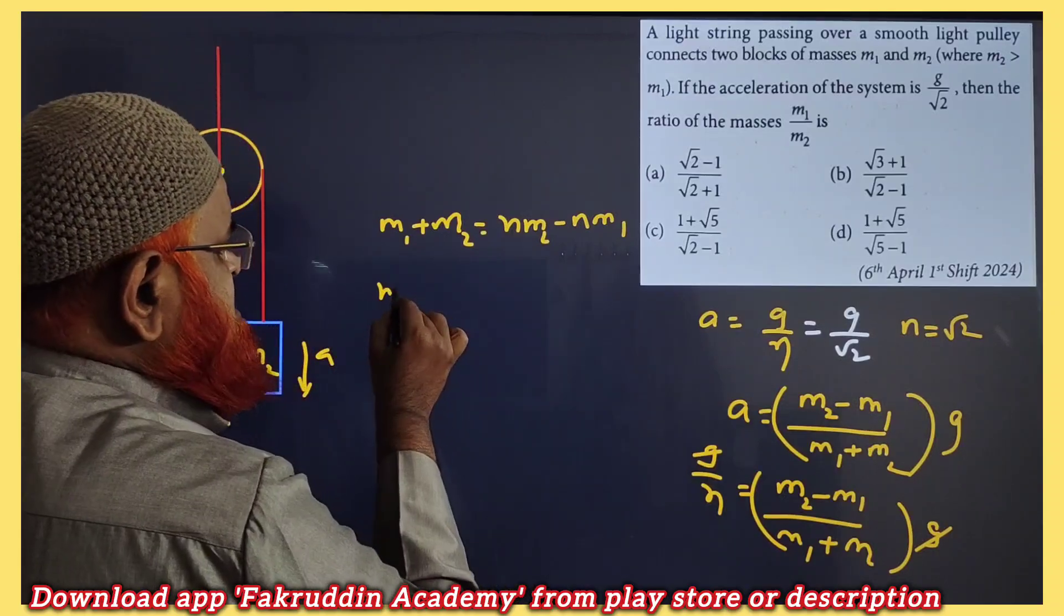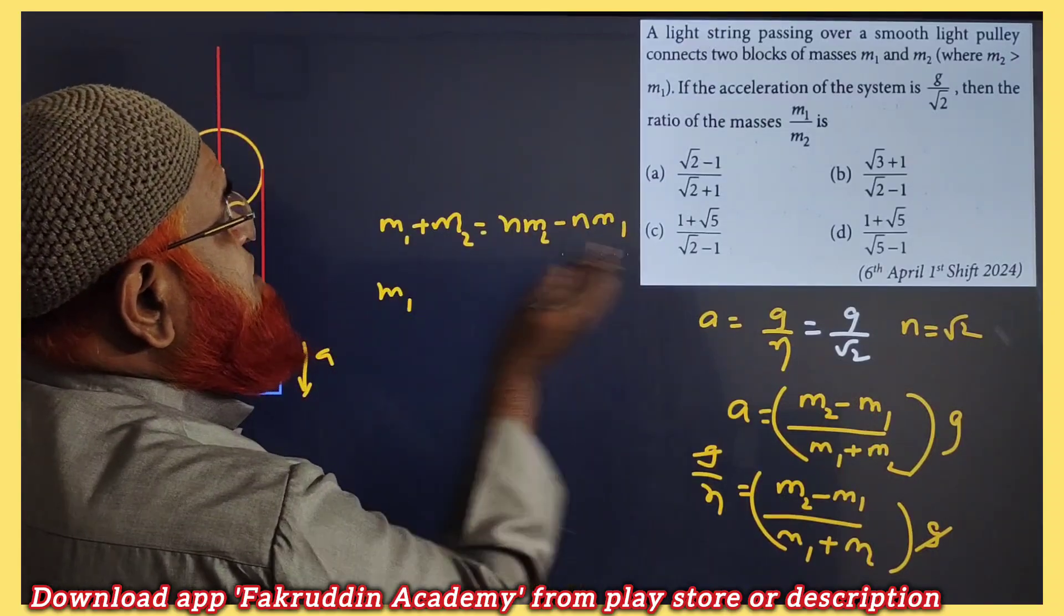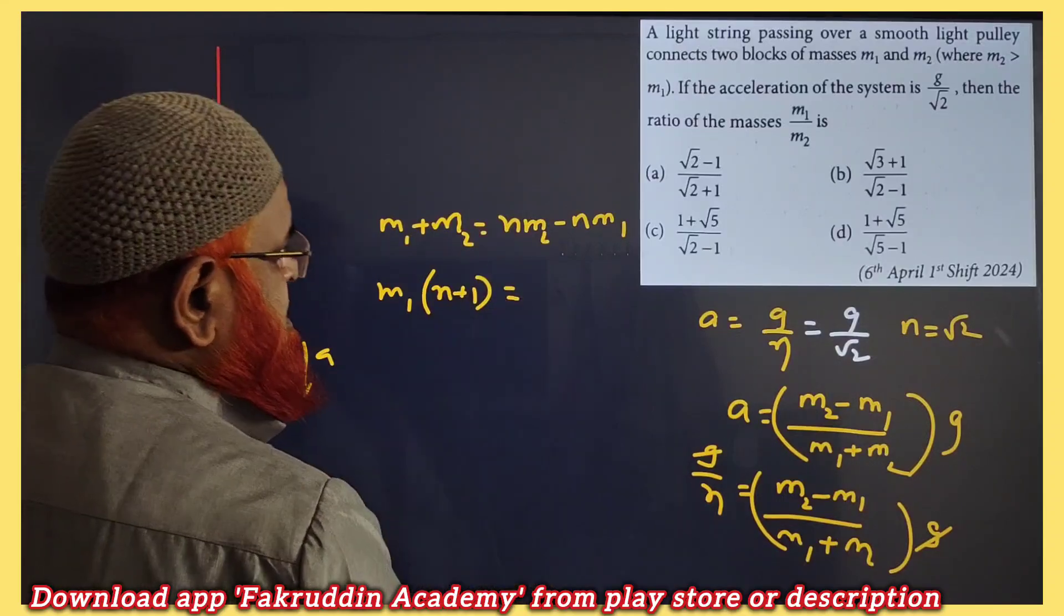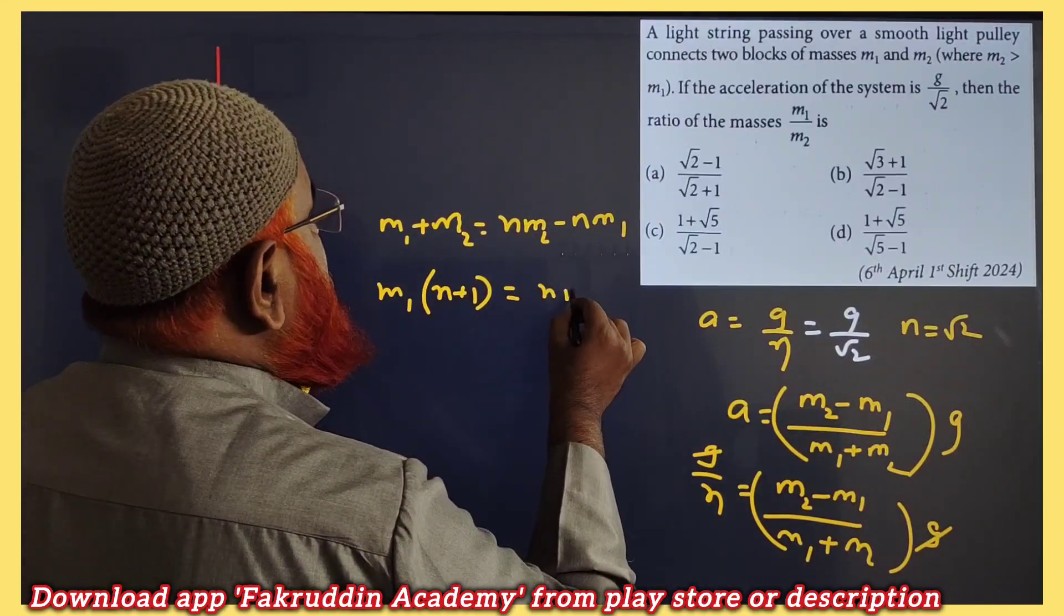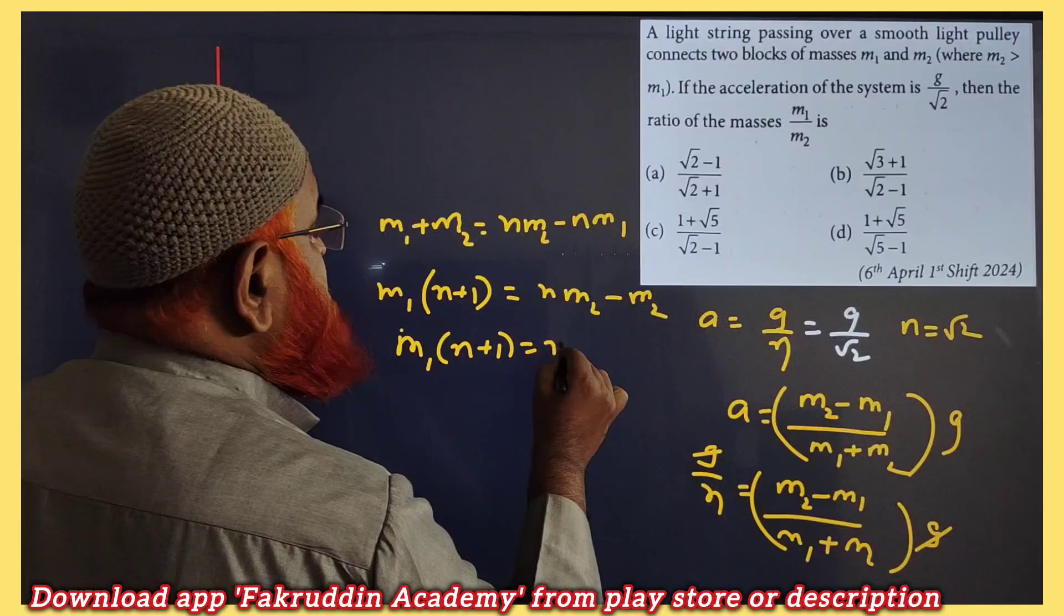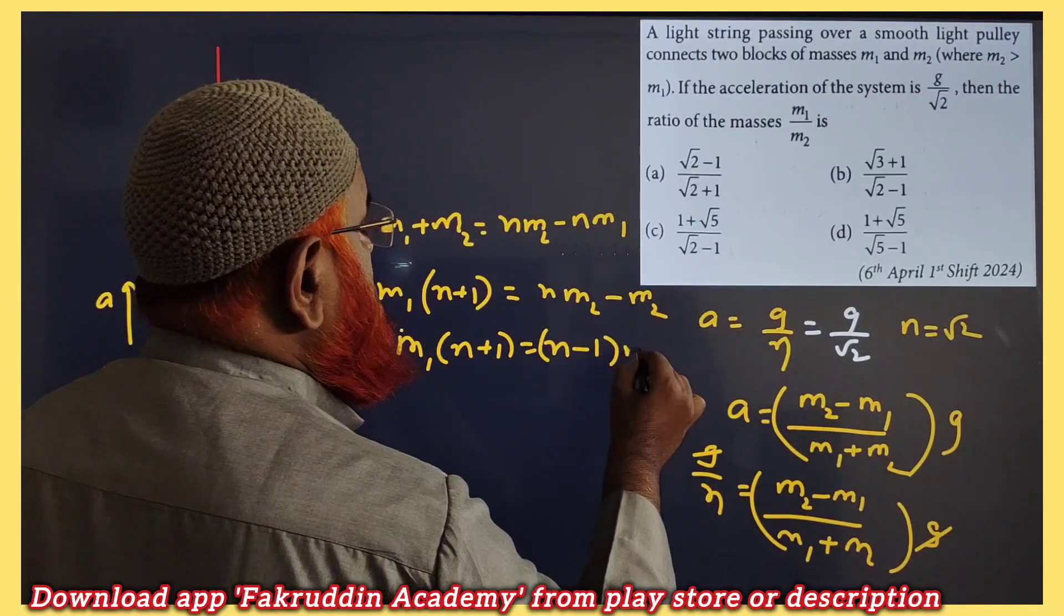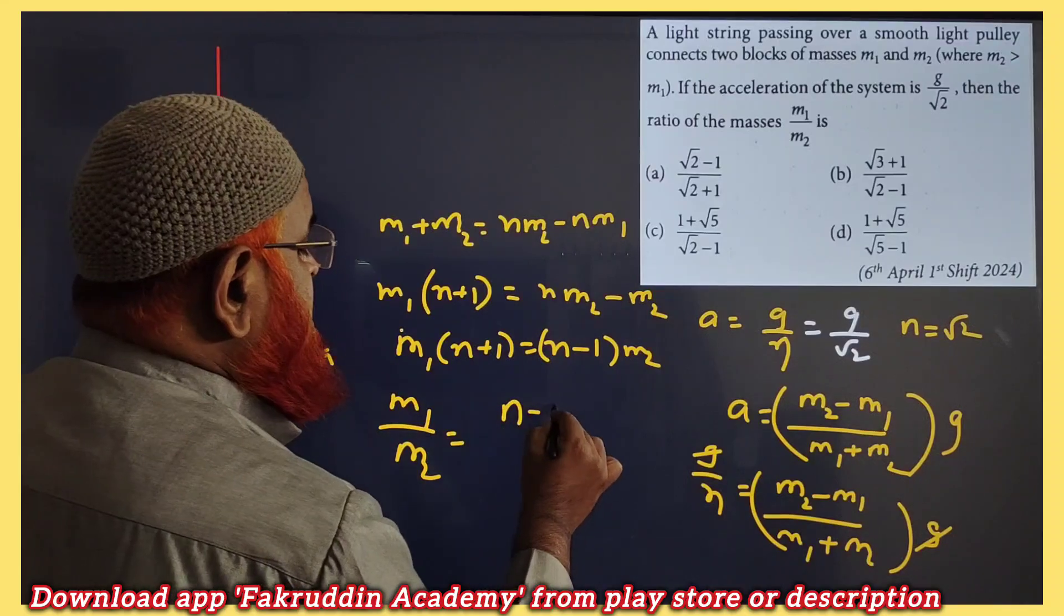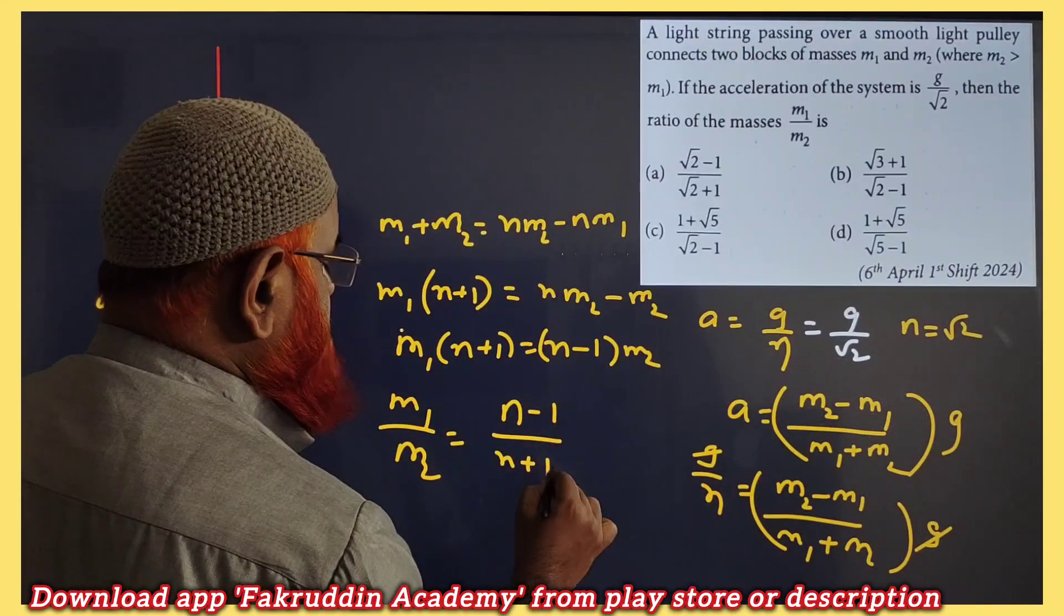So here, this is m1. If you take n m1 common, it is going to become n plus 1. So here, n m2 which is equal to n minus 1 into m2. Therefore, we can write m1 by m2 is equal to n minus 1 by n plus 1.